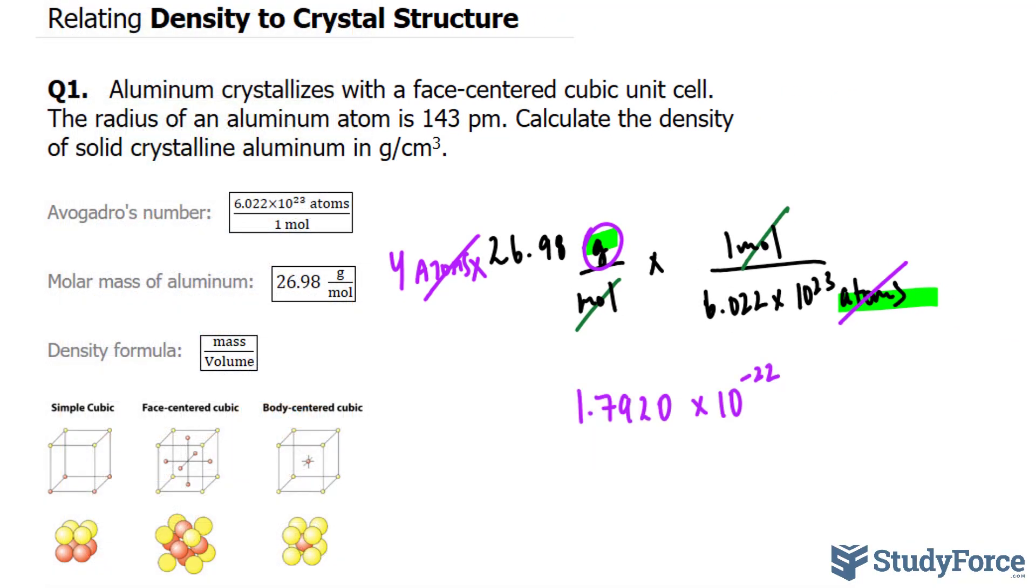This gives us 1.7920 times 10 to the power of negative 22. As I mentioned, this number should be rounded to four significant figures. But we won't do our rounding until the very end. So I'll just place a dot right here as a reminder that it should be four significant figures.